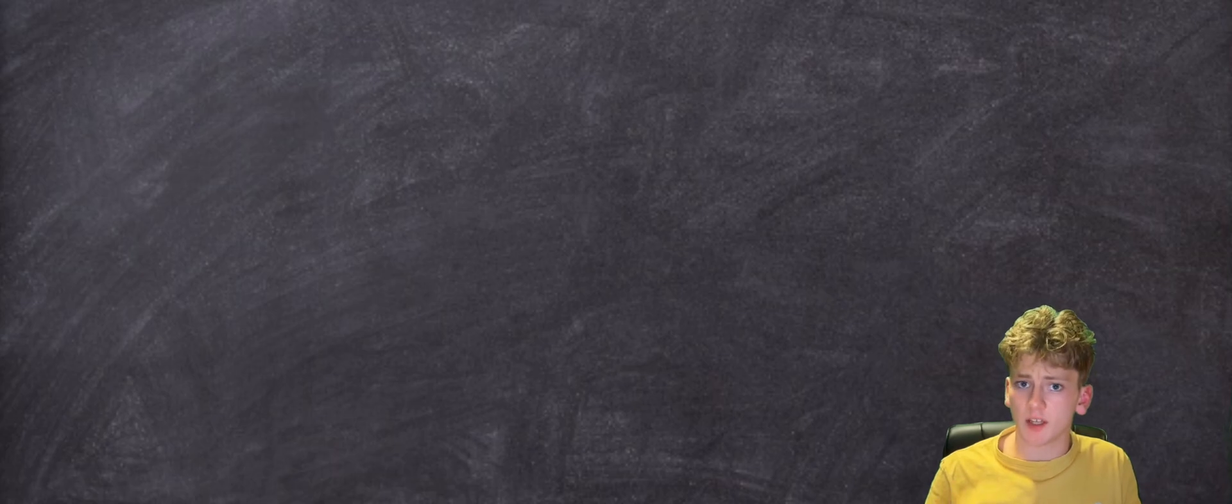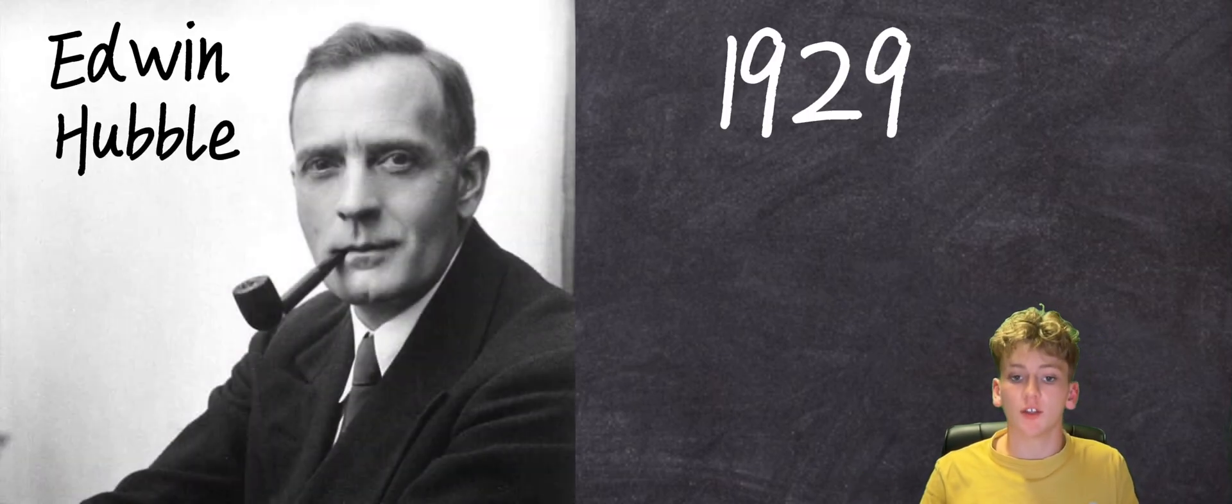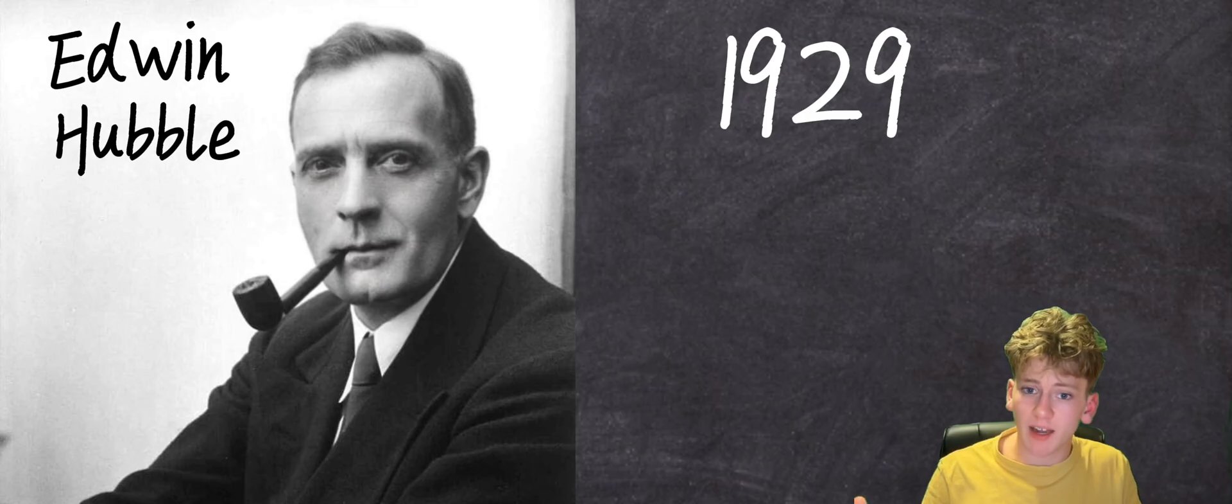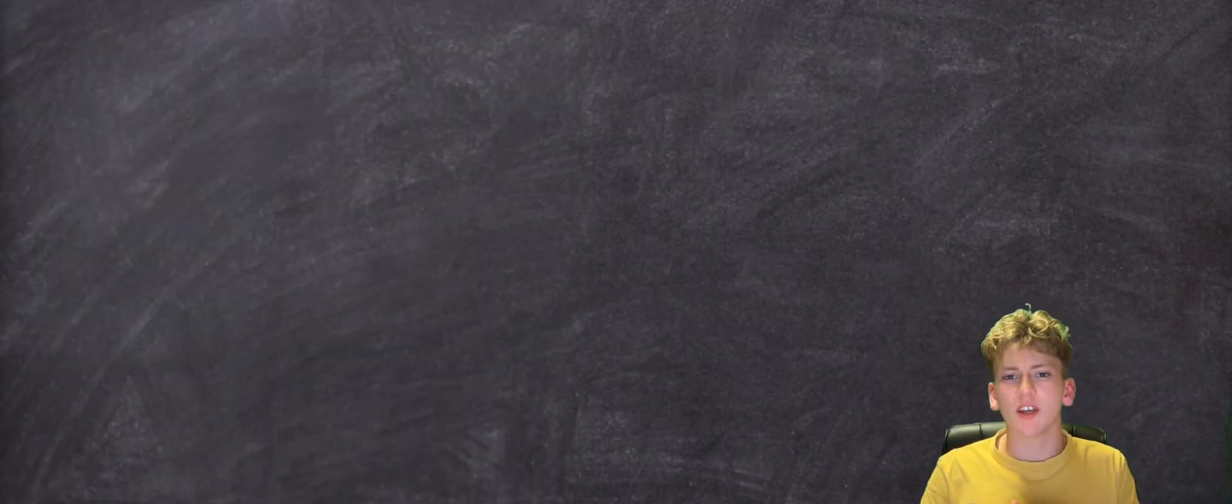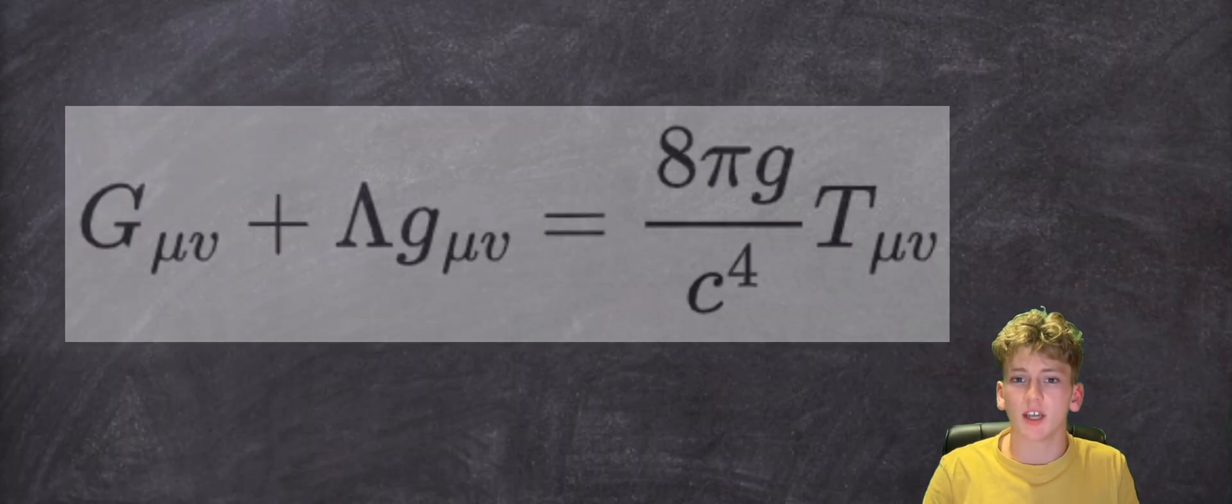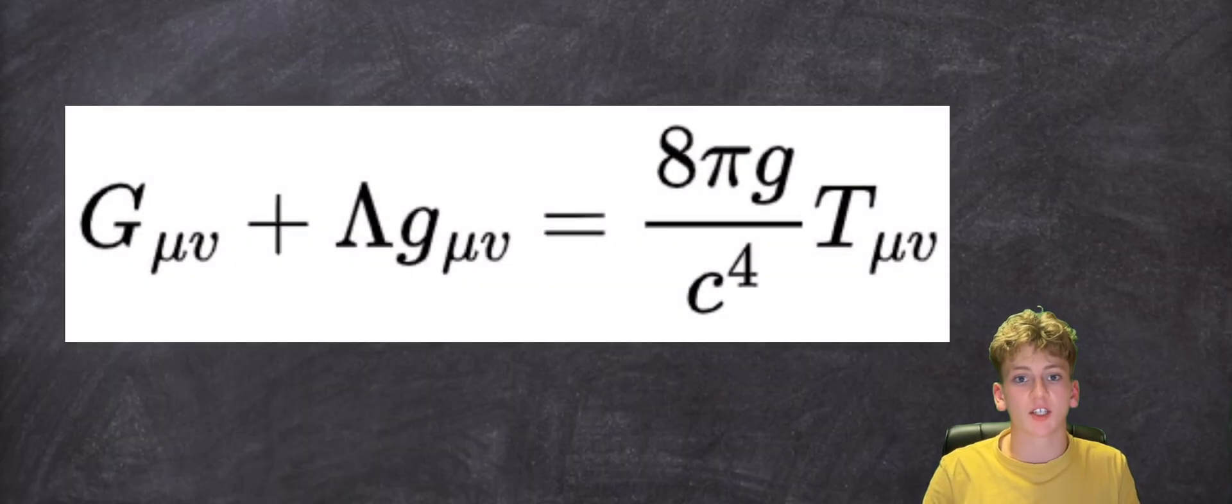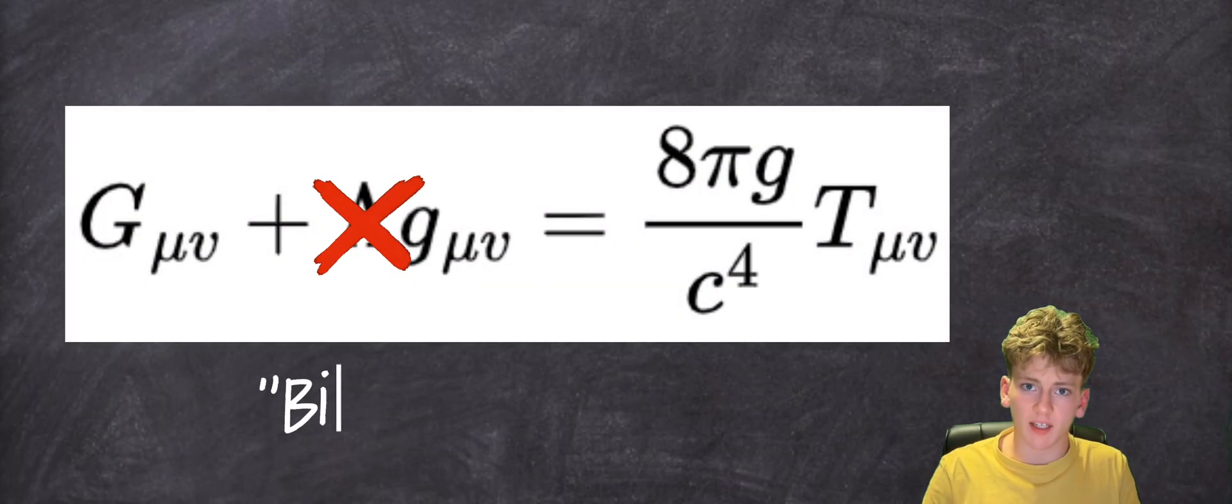Although the maths of this was sound, Edwin Hubble showed in 1929 that the universe was actually expanding. A static universe model was no longer needed, and the field equation no longer needed a value of lambda to keep it stable. Einstein scrapped it, calling it his biggest blunder.